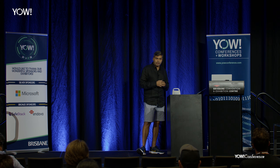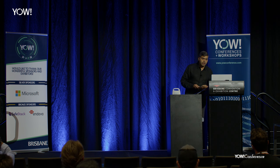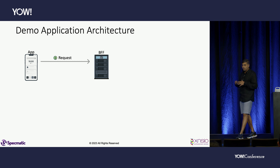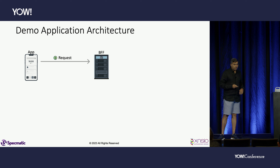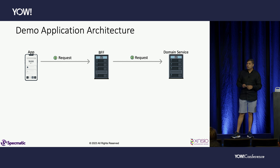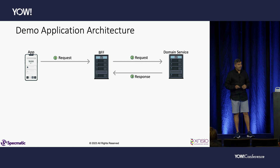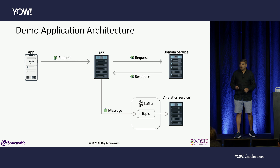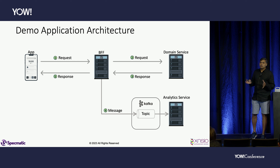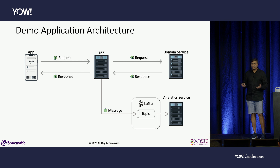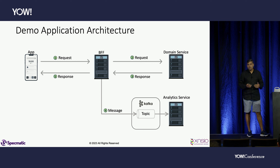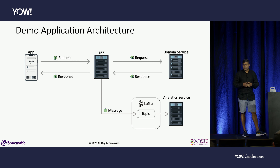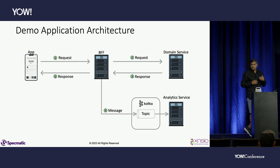This talk presents a solution — not the only solution — of how we can address that. We built a little open source tool called Specmatic. For today's demo, I'm going to take an app which makes a request to a BFF (back-end for front-end) layer, which in turn calls a domain service. The domain service returns a response, which gets logged onto a Kafka topic so analytics services can process it. I'll also show a tool called Insights in Specmatic, which helps you visualize all your microservices and the dependencies between them.